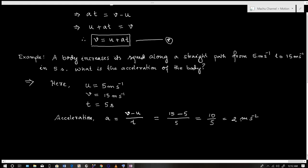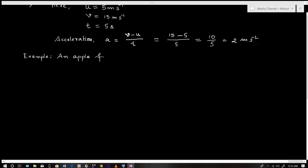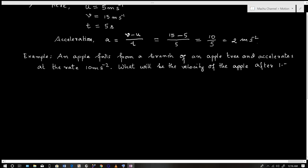Another example: An apple falls from a branch of an apple tree and accelerates at the rate of 10 meters per second squared. What will be the velocity of the apple after 1.5 seconds? Here, initial speed u is zero, time t is 1.5 seconds, and acceleration is 10 meters per second squared.